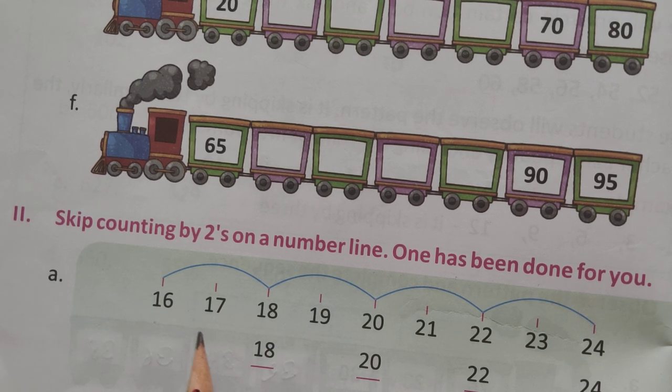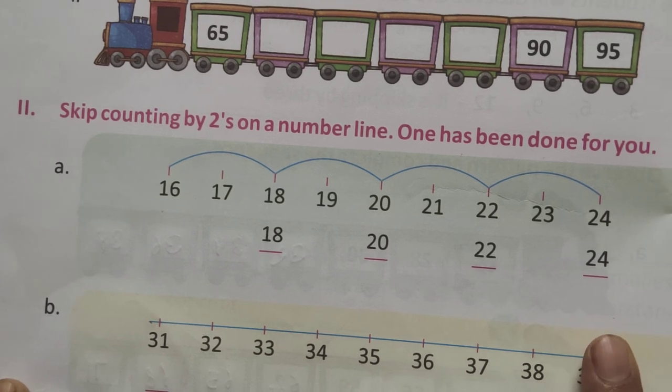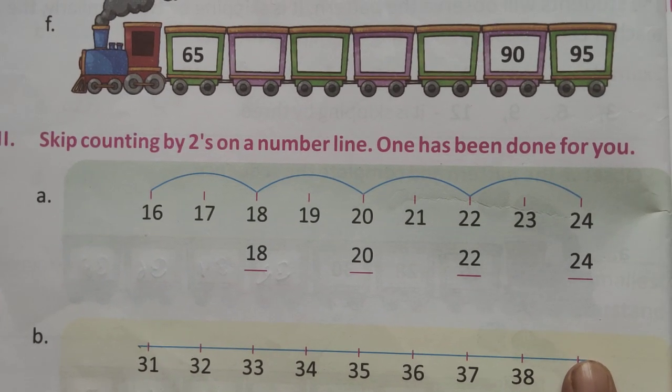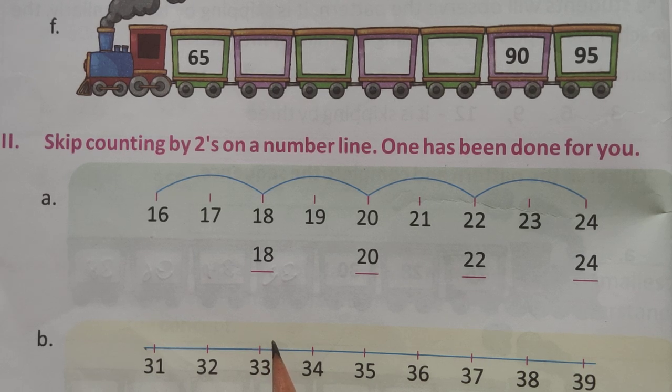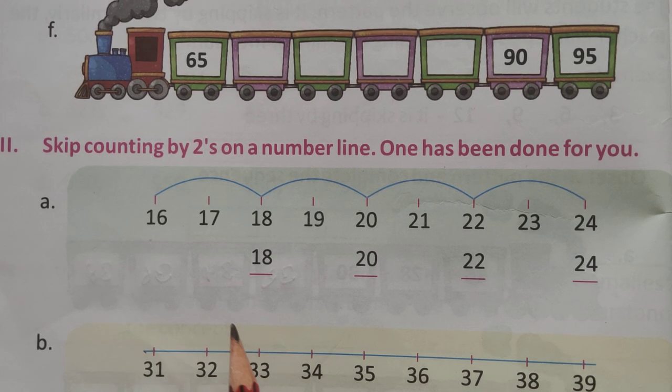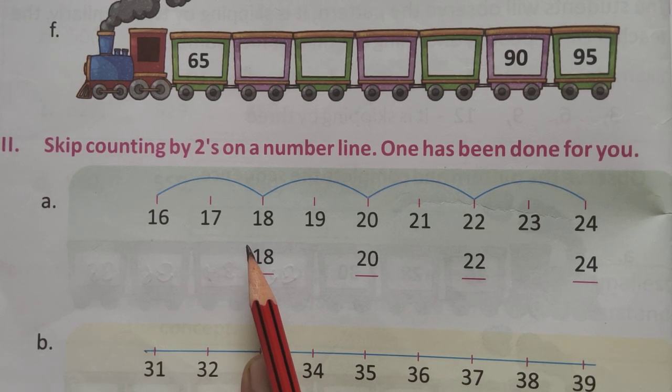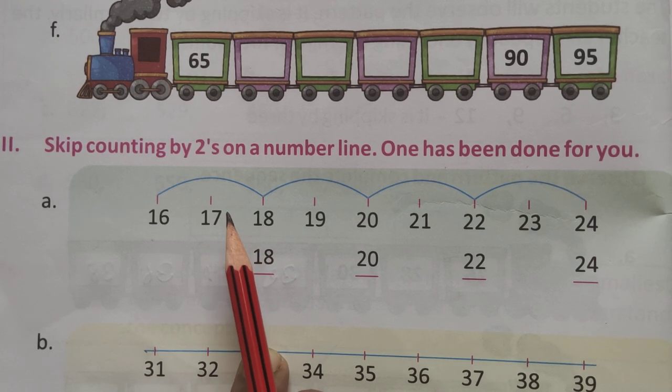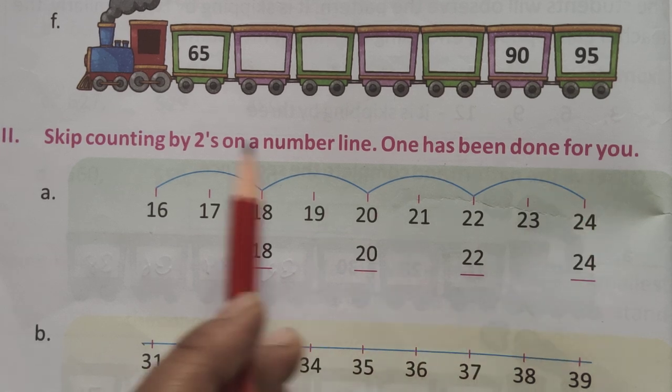Next topic is, Skip counting by 2 on a number line has been done for you. 16. First of all, My question, I repeat again. Skip counting by 2 is on a number. One has been done for you.